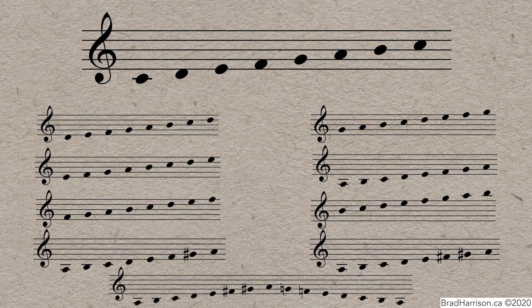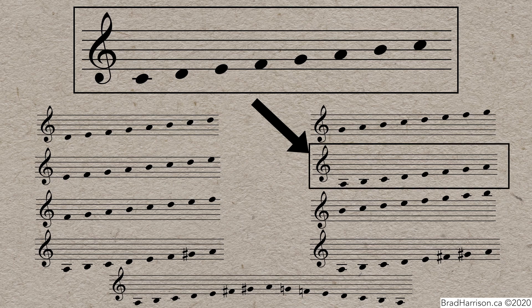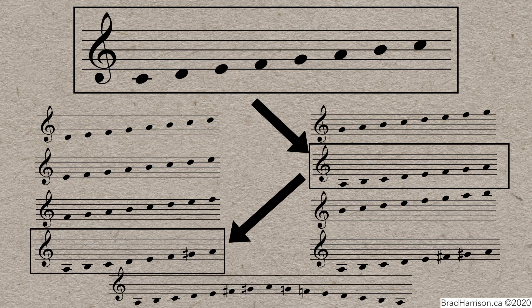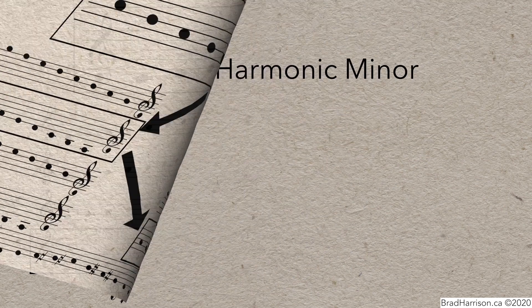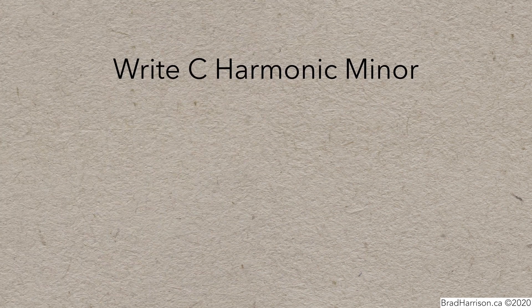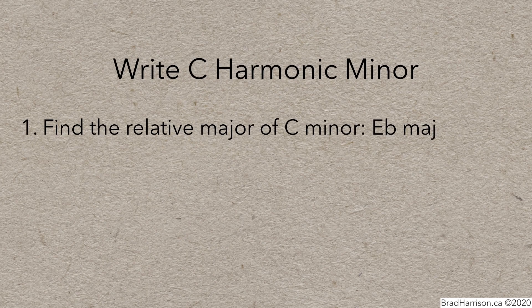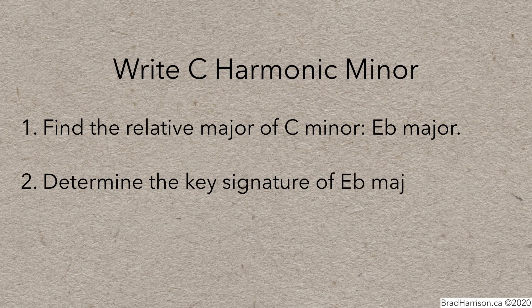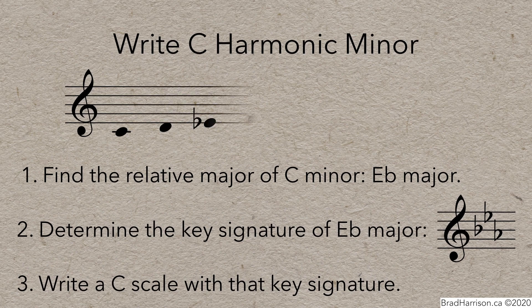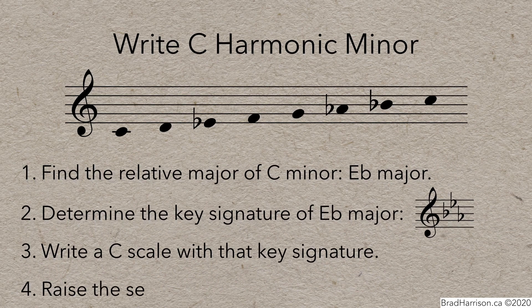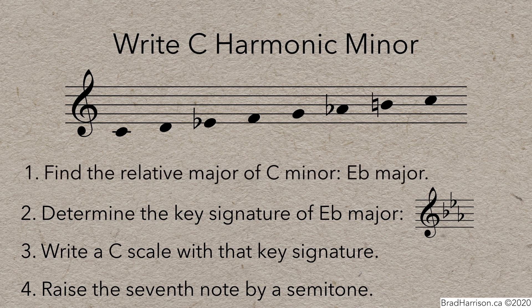To get to A harmonic minor, you had to start with C major, go to the 6th mode, and then raise the 7th note by a semitone to end up with harmonic minor. That means that if you were going to go in the other direction and wanted to write C harmonic minor, you'd have to find the relative major of C minor, which is Eb major, then determine the key signature of Eb major, which is 3 flats, then write a C scale with that key signature, and then raise the 7th note by a semitone. It works, but it's a bit cumbersome.